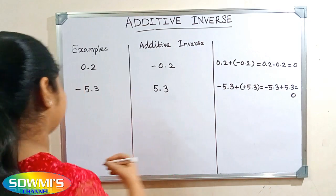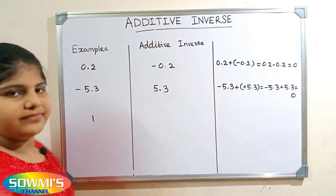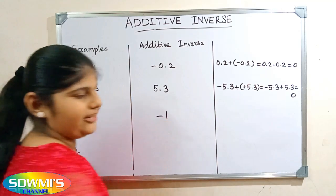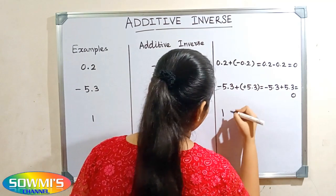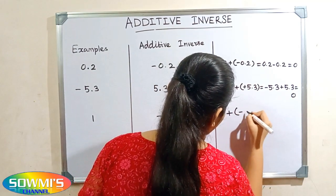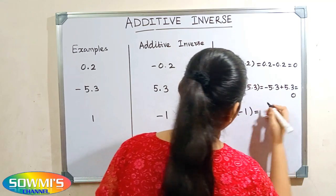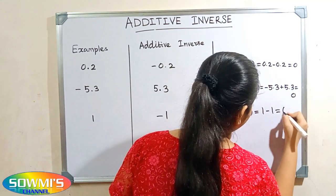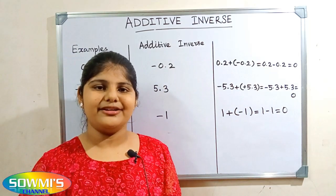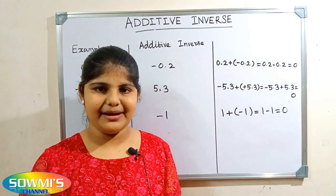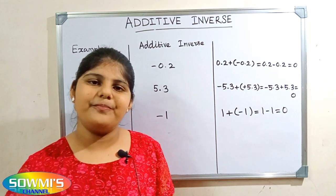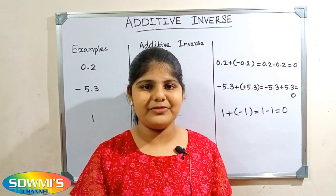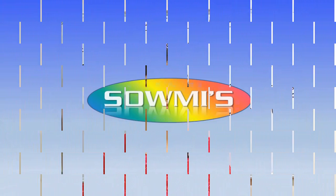Next we will take one more example: one. The additive inverse of one will be minus one. According to the property, one plus minus one — plus into minus will be minus — so one minus one which is equal to zero. To find the additive inverse of a given number, just write the opposite number. Hope all friends understood how to find additive inverse. Keep watching SOMS channel. Bye friends, thank you. Bye.